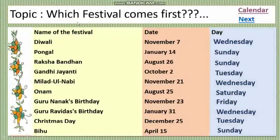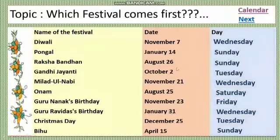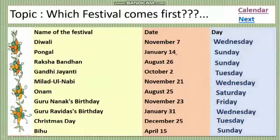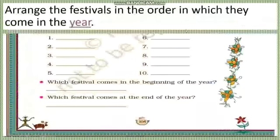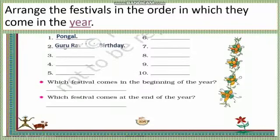We know the first month of the year is January. Looking at the dates, January has two festivals. Pongal comes on January 14th and Guru Ravidas's birthday on the 31st. Which date comes first — 14 or 31? Obviously 14 is first. So first comes Pongal, and after that Guru Ravidas's birthday.